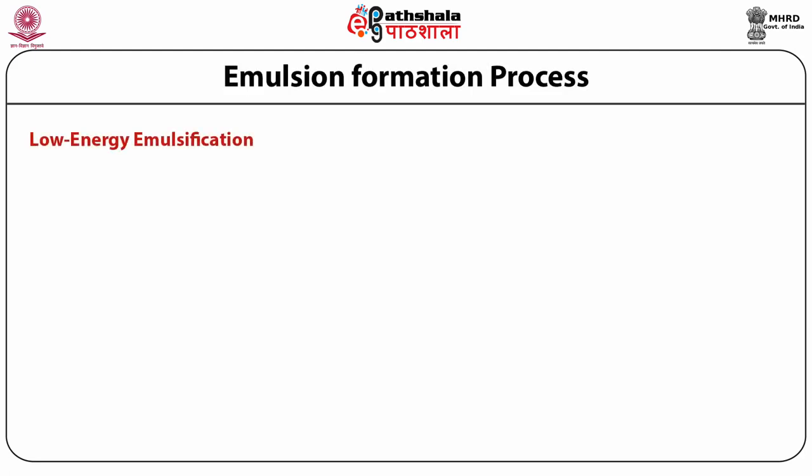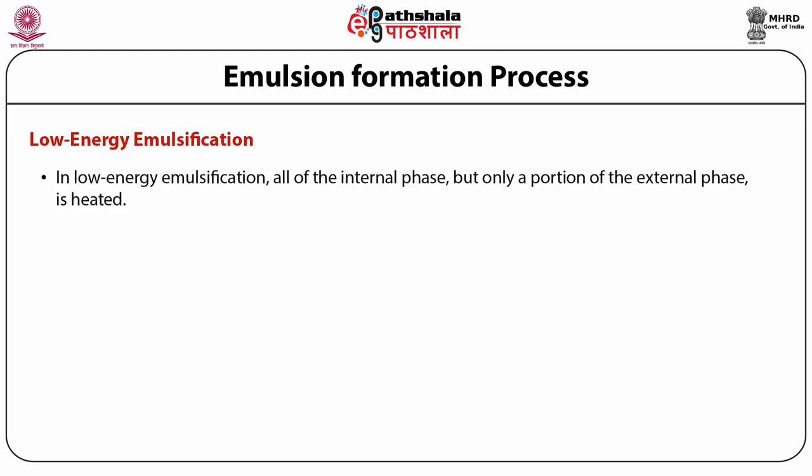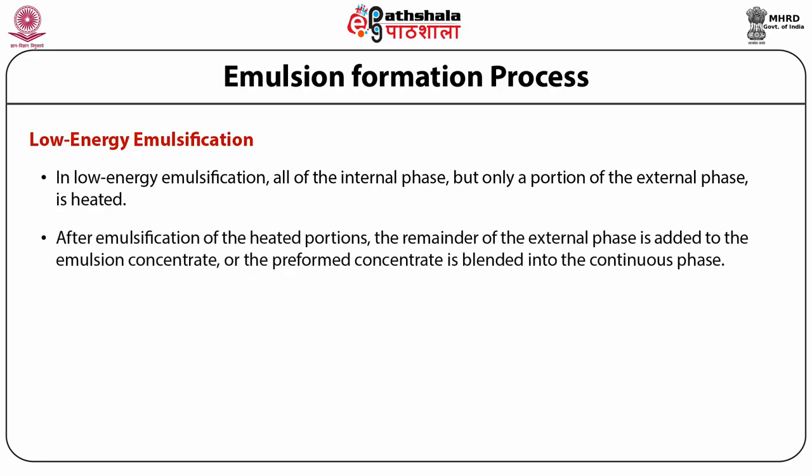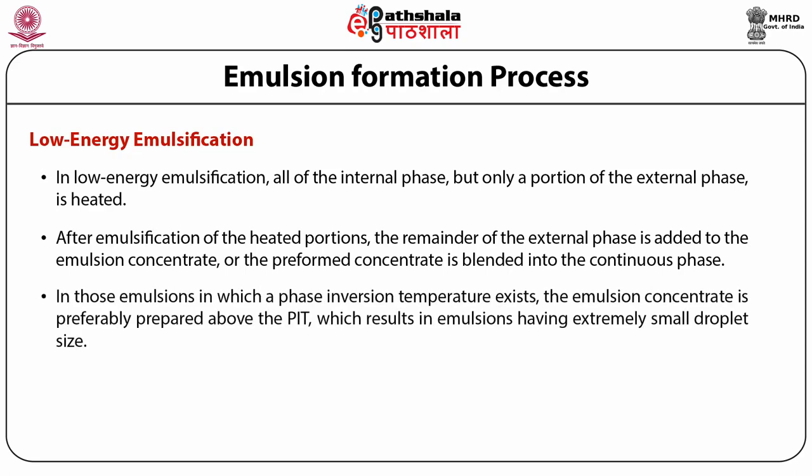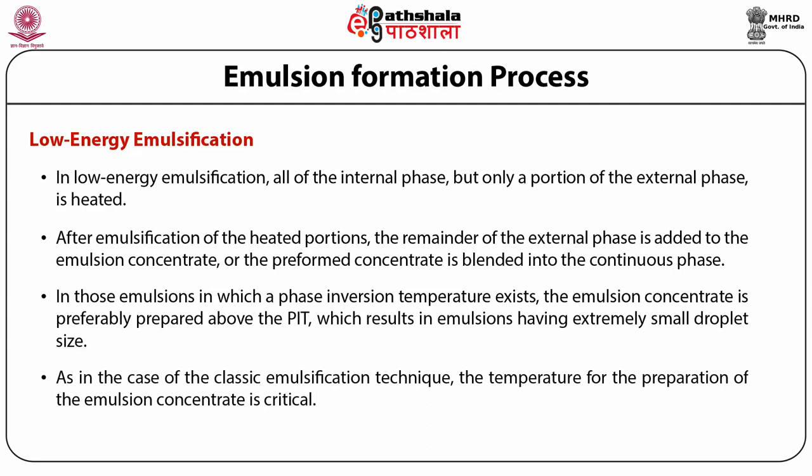In low energy emulsification, all of the internal phase but only a portion of the external phase is heated. After emulsification of the heated portions, the remainder of the external phase is added to the emulsion concentrate. In emulsions where a phase inversion temperature exists, the emulsion concentrate is preferably prepared above the phase inversion temperature, resulting in emulsions having extremely small droplet size. The temperature for the preparation of the emulsion concentrate is critical, and it is important to effect in-situ neutralization of acidic emulsifying components during the emulsion step.